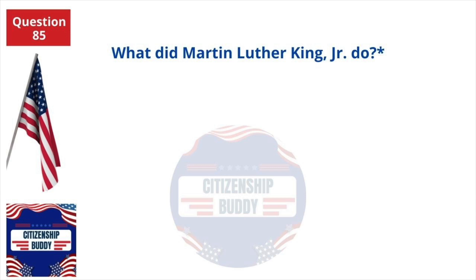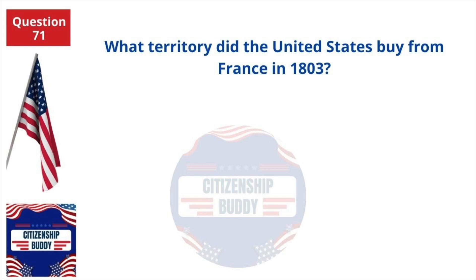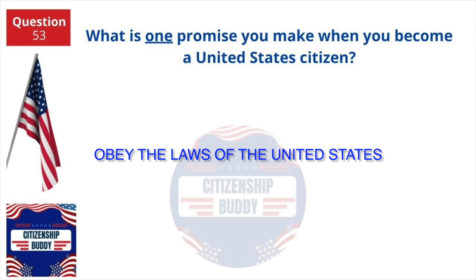What did Martin Luther King Jr. do? Fought for civil rights. How many U.S. Senators are there? One hundred. What territory did the United States buy from France in 1803? The Louisiana Territory. What is one promise you make when you become a United States citizen? Obey the laws of the United States.